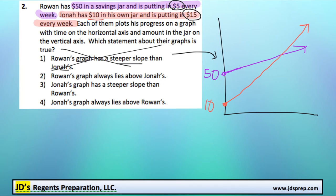The second one states that Rowan's graph always lies above Jonah's. We've also proven graphically that that's not true because eventually Jonah will have more money than Rowan.